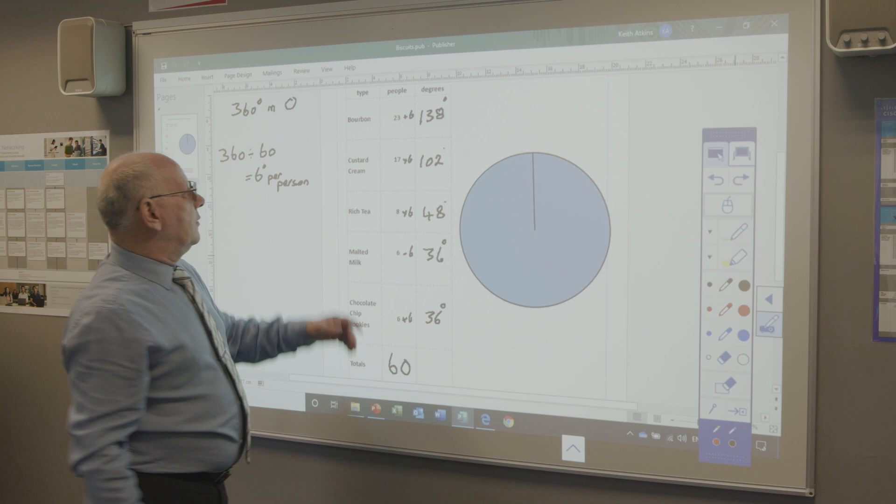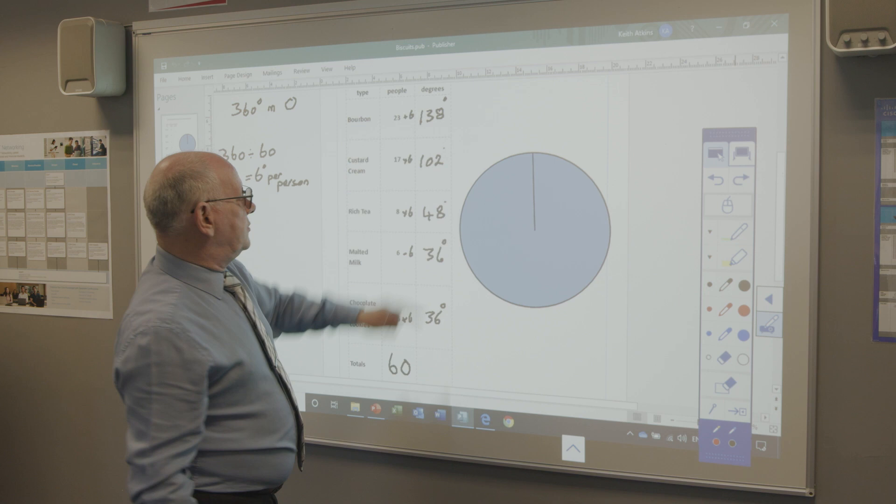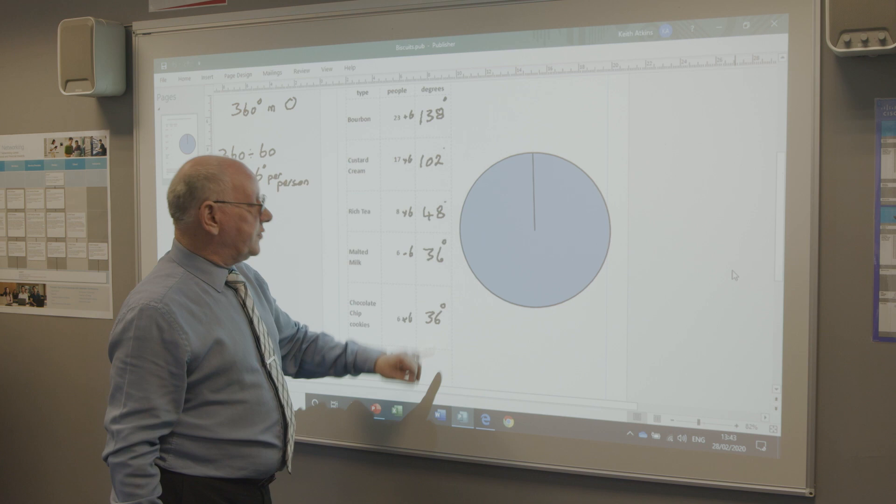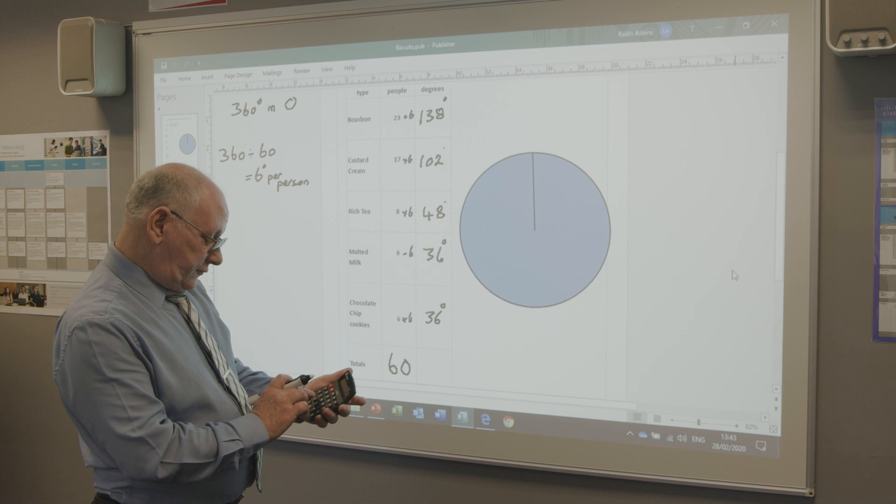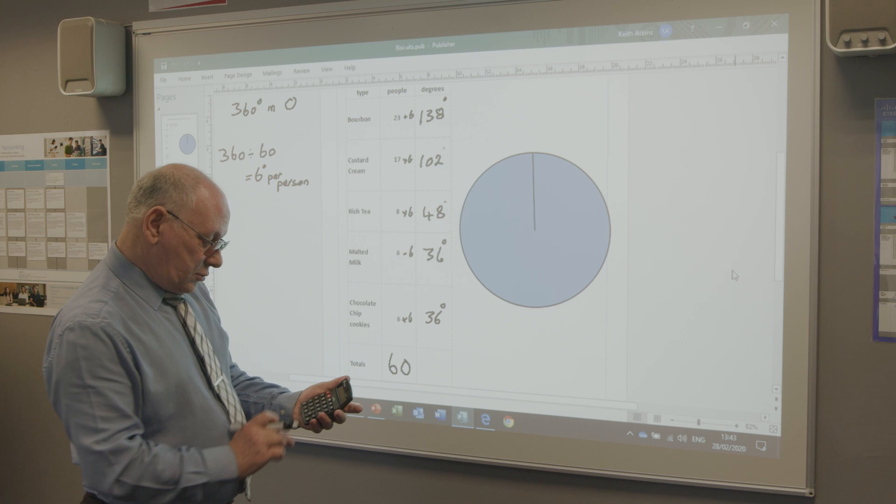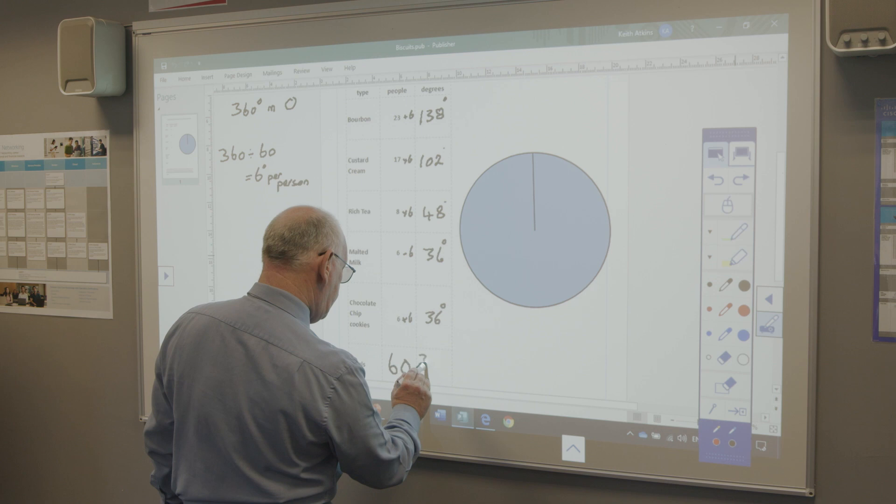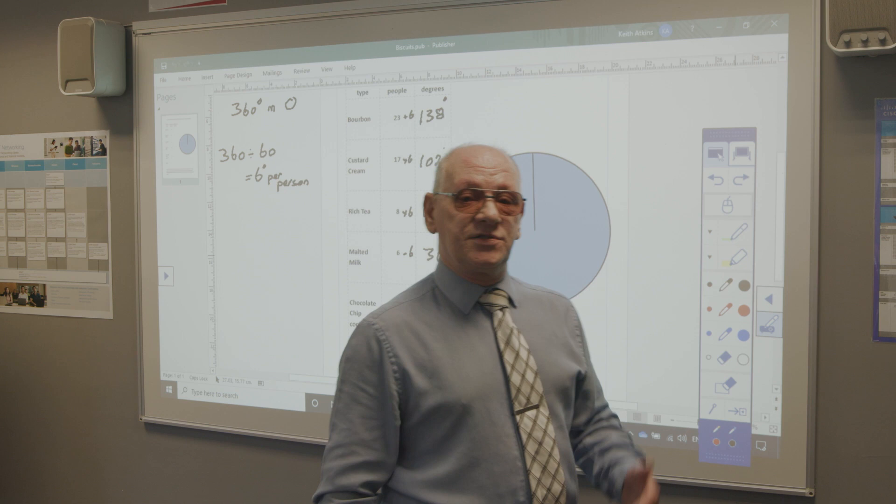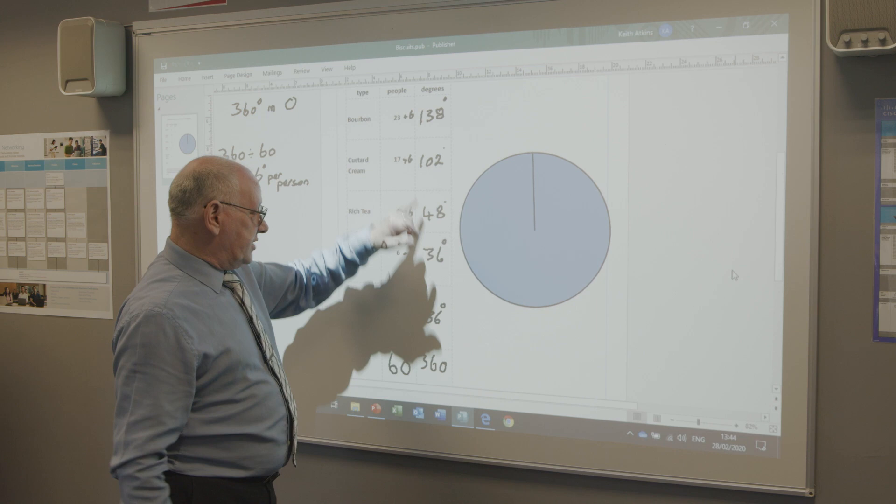So we've got our number of people, 60. We've got our degrees. But what we haven't checked, and we need to, is that all this adds up to the 360 we started with. If it doesn't, we've done something wrong. So 138 plus 102, plus 48, plus 36, plus 36 equals 360. So we're all right. We can put the 360 on. So if a maths tutor can check with the calculator, so can you. Don't leave it to chance that you've got it right the first time. Add them up and check. 360.